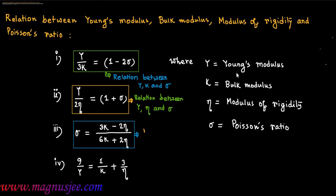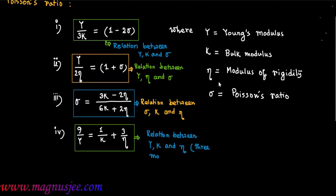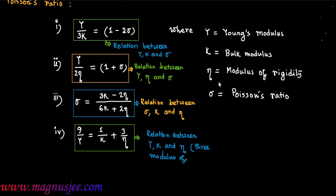The third relation is between σ, K, and η — that is, between Poisson's ratio, Bulk modulus, and Modulus of Rigidity. The last relation is 9/Y = 1/K + 3/(2η), which is the relation between the three moduli of elasticity: Y, K, and η.